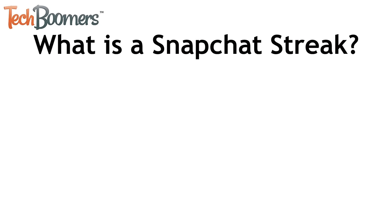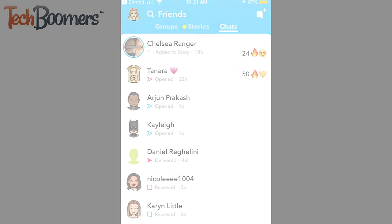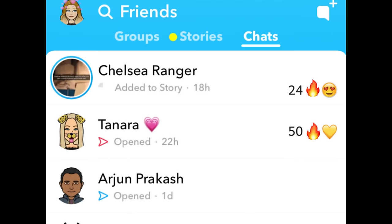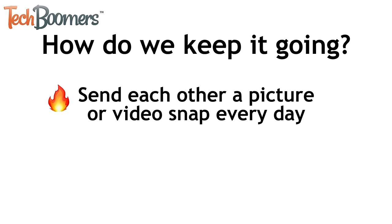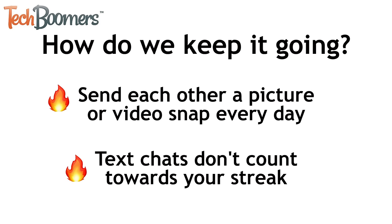First of all, what exactly is a Snapchat streak? A streak means that you and one of your Snapchat friends have both snapped each other a picture or video within a 24-hour period for at least three consecutive days. Once you start a streak, a flame with a number will appear next to the name of the friend you have a streak with. The number beside the flame tracks the number of days you've kept the streak going. To keep it going, you and your friend will both need to send each other a picture or video snap every day. Text chats don't count towards your streak.